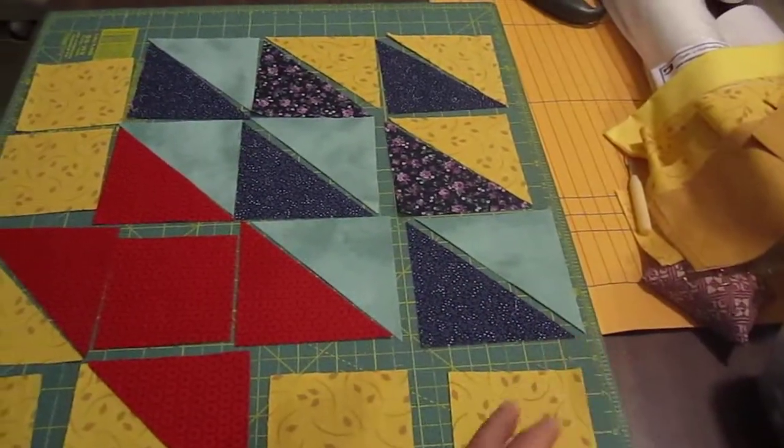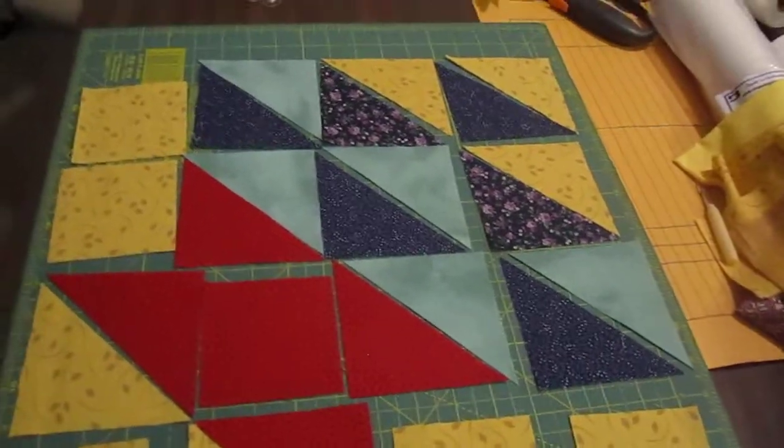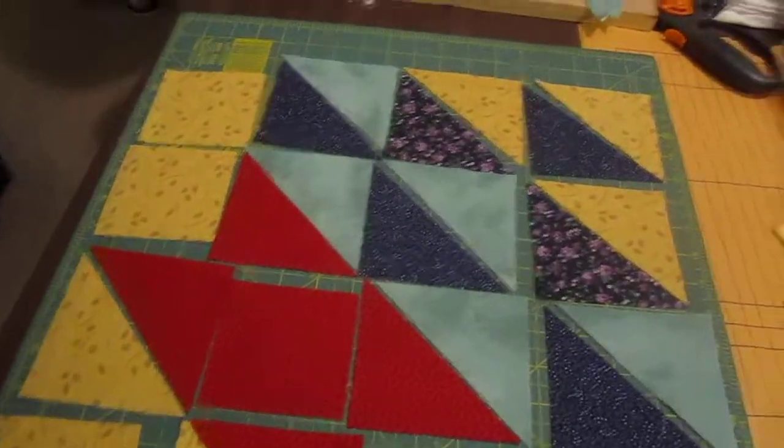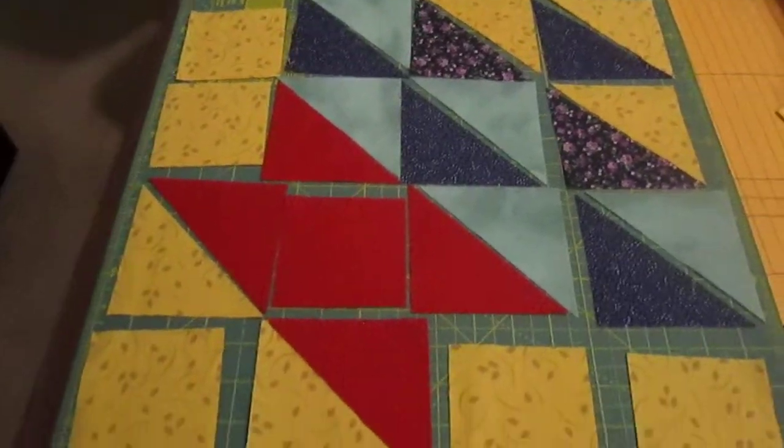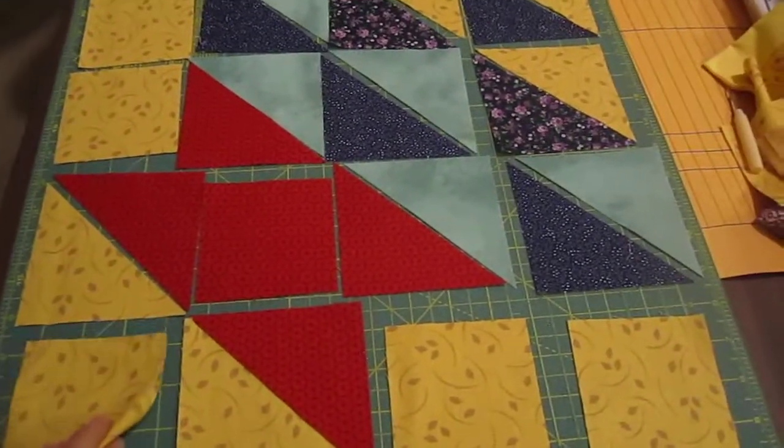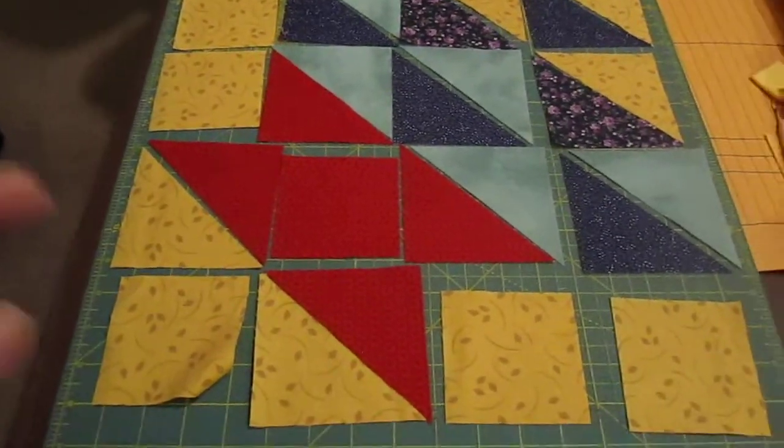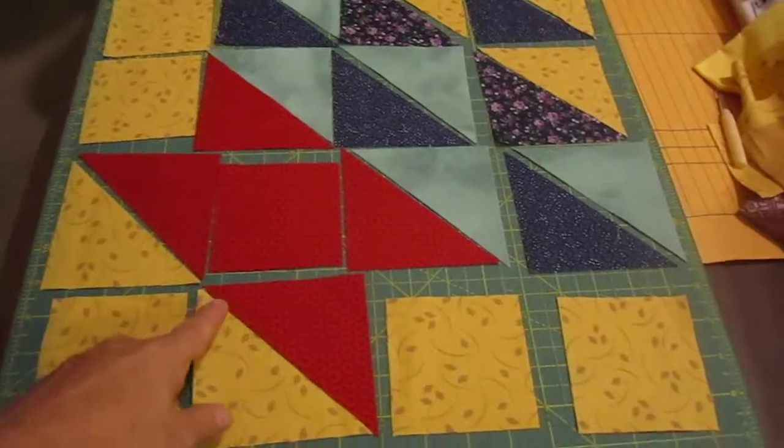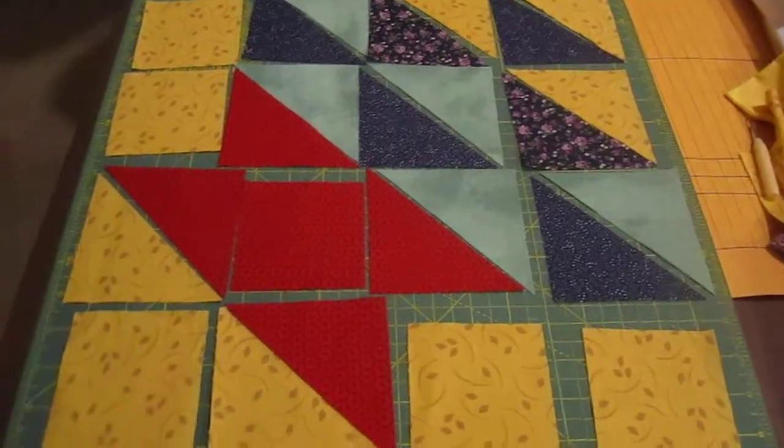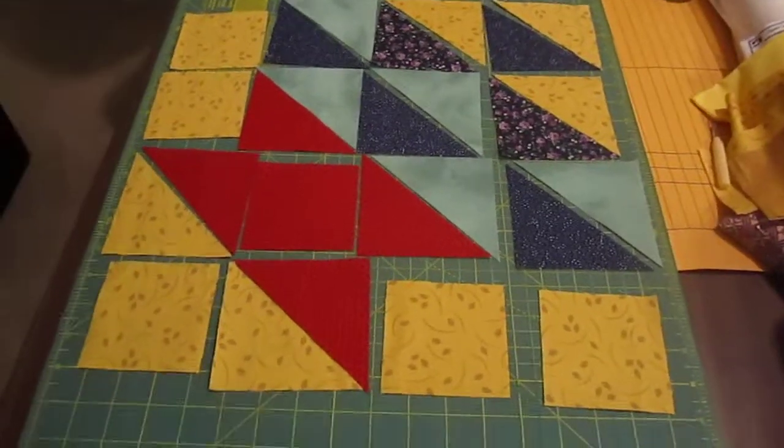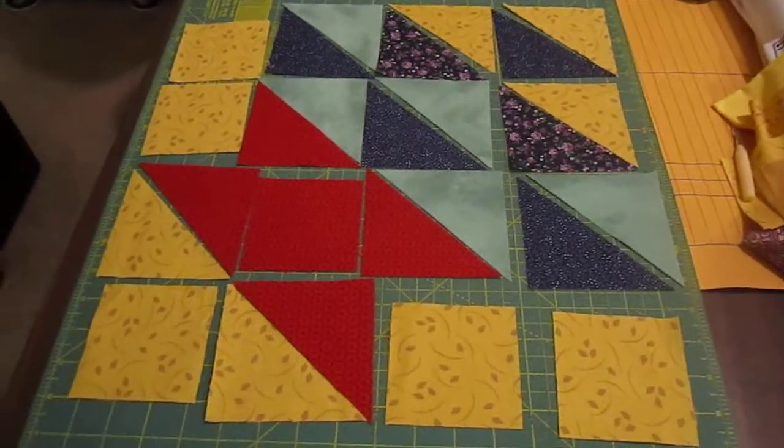Then we'll join the halves together. Don't forget how important it is, when you put your rows together, to place your pins at the corner of the points so that you get your good block when it's put together.